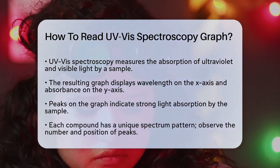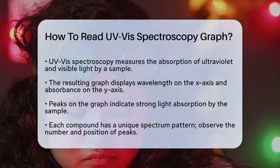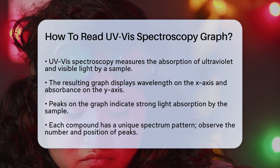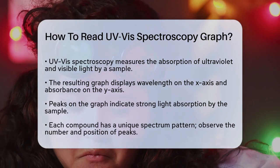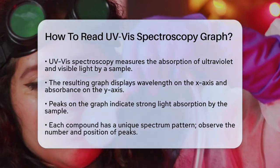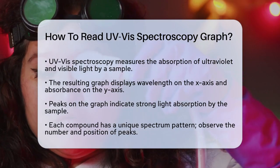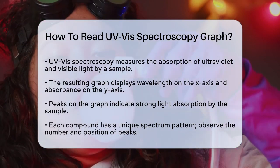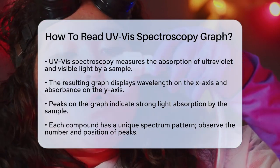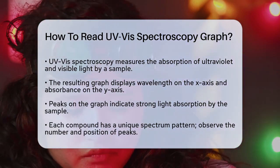When you look at a UV-Vis spectrum, you'll see a graph with wavelength on the x-axis and absorbance on the y-axis. The peaks on this graph indicate where the sample absorbs light strongly. Here's how you interpret these peaks.